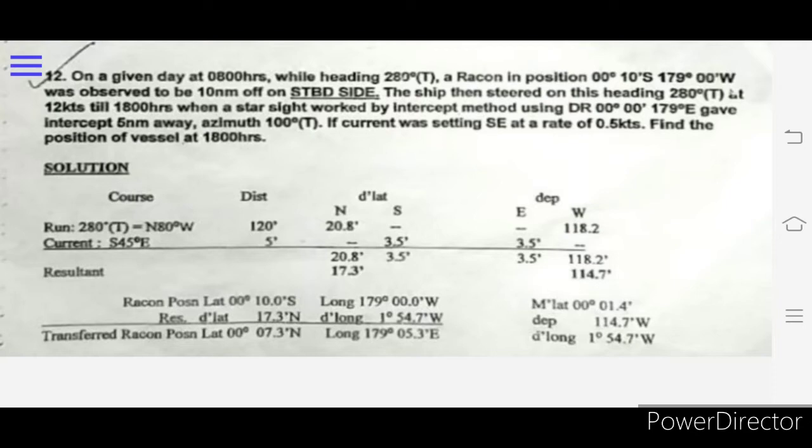The ship then steered on this heading 280 at 12 knots till 1800 hours, when a star sight worked by intercept method using DR 00°00' 179°00'E got the intercept 5 nautical miles away, azimuth 100 degrees.